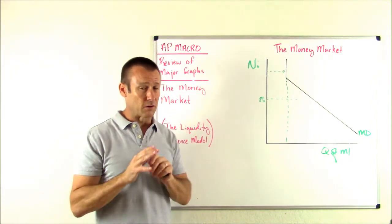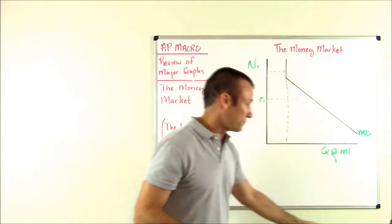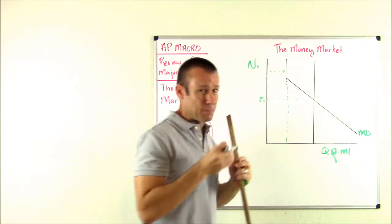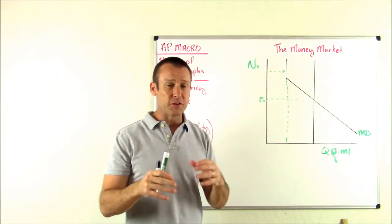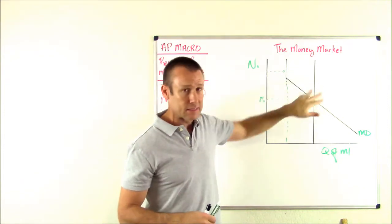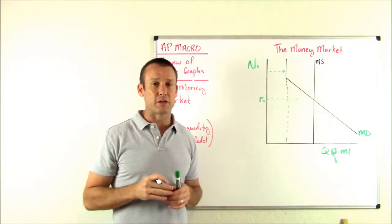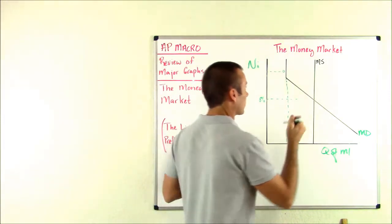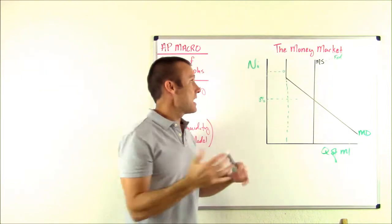Now let's put the money supply curve on the graph. The money supply curve is vertical, meaning it is not sensitive to the nominal interest rate. Why? Because who is determining the money supply? The central bank of a country — in the United States, that's the Fed. I like to put a little dash and write 'Fed' as a reminder that it is the Fed controlling this, not the nominal interest rate.